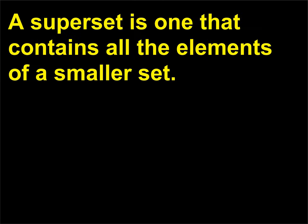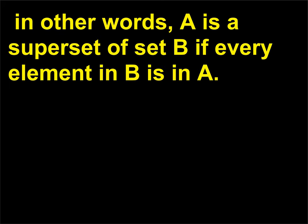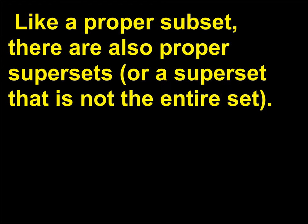When is a set a superset? A superset is one that contains all the elements of a smaller set. For example, if B is a subset of A, then A is a superset of B. In other words, A is a superset of set B if every element in B is in A. Like a proper subset, there are also proper supersets, or a superset that is not the entire set.